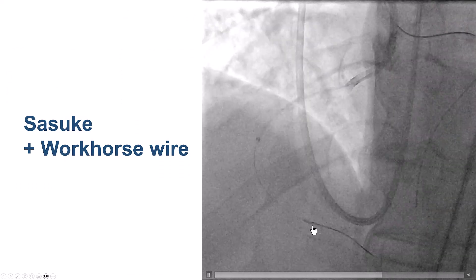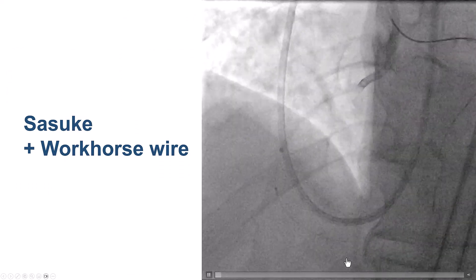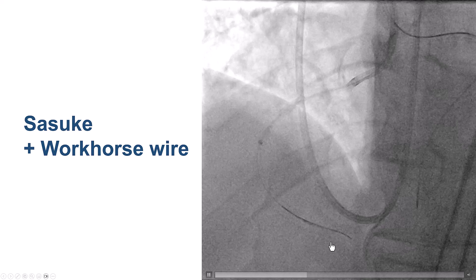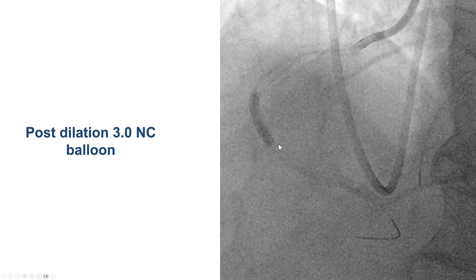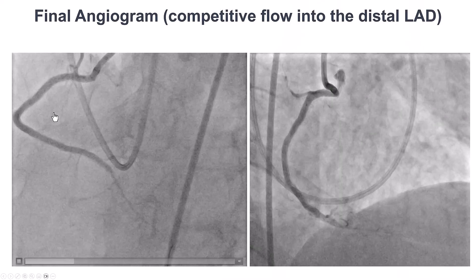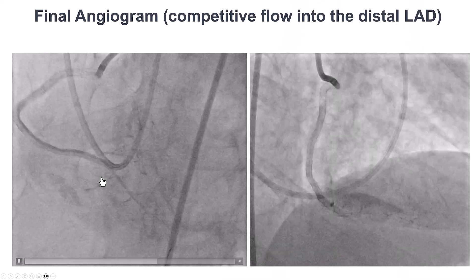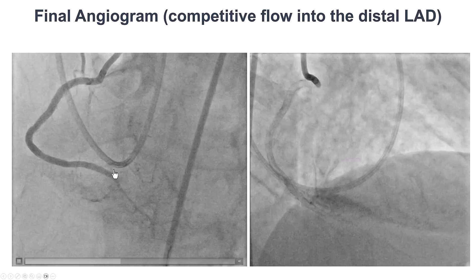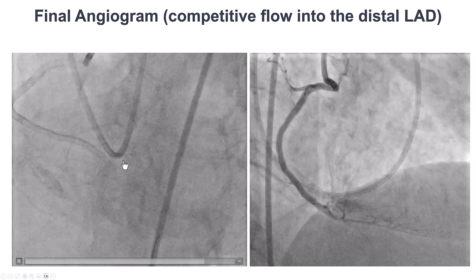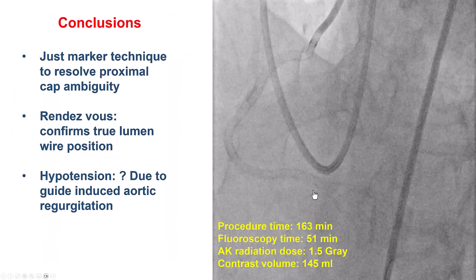We then used a Dualulin microcatheter to wire the PDA, which was the larger branch compared to the right posterolateral. Stents were placed from the distal RCA to the proximal segment. We kept the microcatheter in the collateral as bailout protection, and post-dilated. The final result showed TIMI flow into the PDA. There was some flow into the small posterolateral, and we decided not to intervene further there.